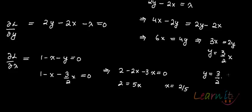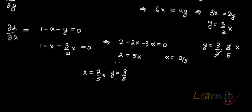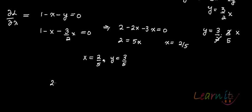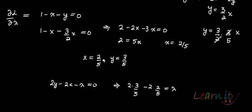Putting x = 2/5 into y = (3/2)x gives y = (3/2)(2/5) = 3/5. So x = 2/5 and y = 3/5. For lambda, using the second equation 2y - 2x - lambda = 0: lambda = 2(3/5) - 2(2/5) = 6/5 - 4/5 = 2/5. So lambda = 2/5.